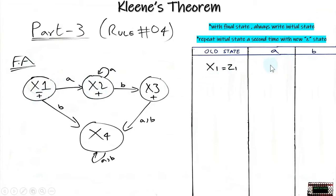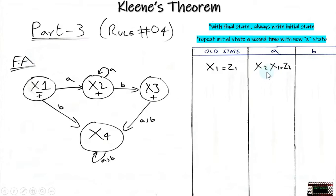Currently we are in state x1 and by getting input a we go to state x2, so we write x2. The x1 is also written here because of the rule: with a final state, always write the initial state. x2 is a final state so we write x1 with it as well, and we name this new state z2. Whenever we get a new state we write it in the old state column.